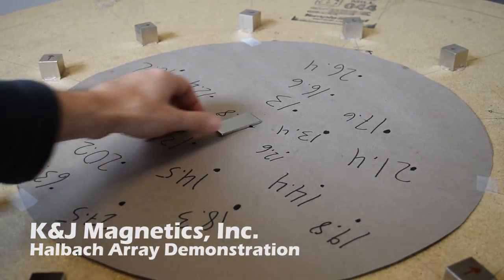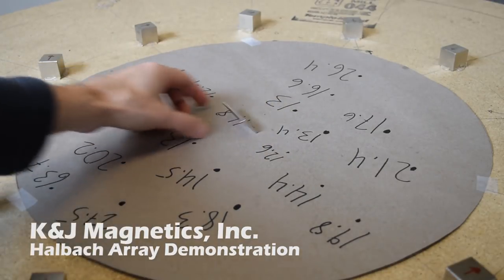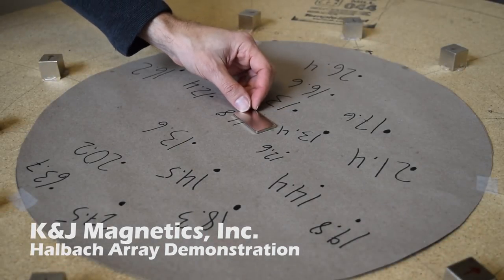This block magnet sitting inside the magnetic field inside a Halbach array twists to align itself with the magnetic field.